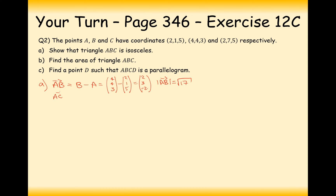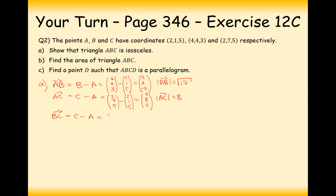For A to C, we take C minus A: 2, 7, 5 minus 2, 1, 5, giving 0, 8, 0. That direction vector has magnitude 8. Then for B to C: C minus B is 2, 7, 5 minus 4, 4, 3, giving minus 2, 3, 2. It has the same numbers as AB, so its magnitude is also the square root of 17.